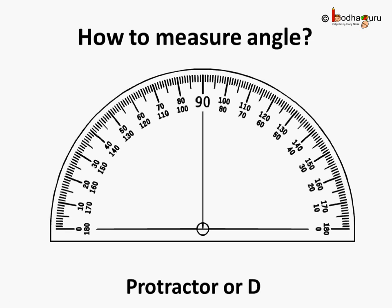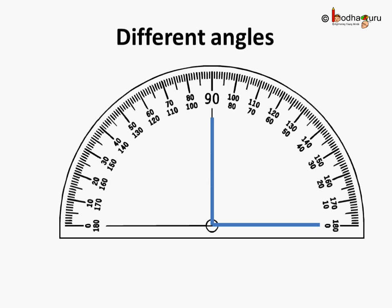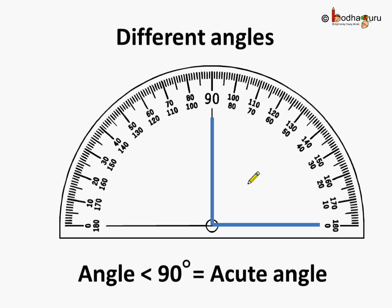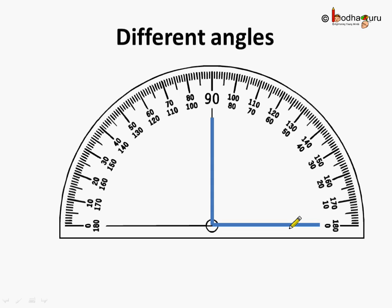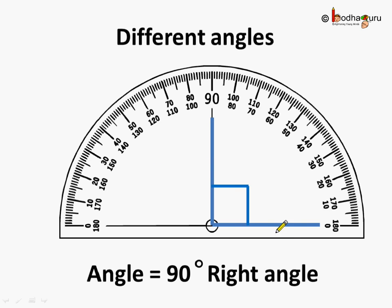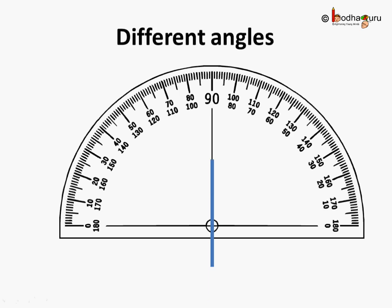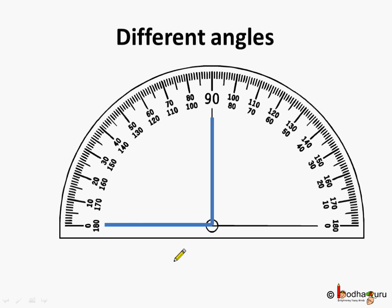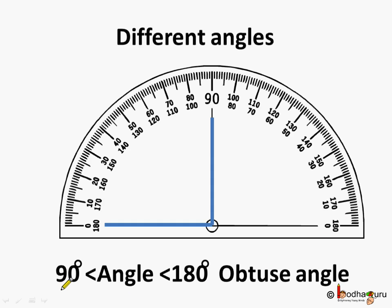Now let us see the different angles once again. This is 0 degrees and this is 90 degrees. When the angle is between 0 and 90 degrees, we call it an acute angle. When the angle between the two lines is equal to 90 degrees, we call it a right angle — right angle is equal to 90 degrees. If the angle is greater than 90 degrees but less than 180 degrees, we call it an obtuse angle.